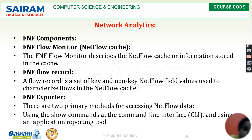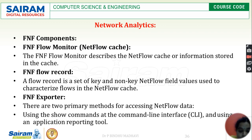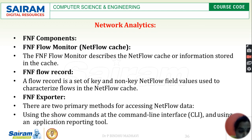The next component is the Flow Record — a collection of key and non-key flow fields used to characterize the NetFlow cache. Data records are characterized based on predefined procedures: how they are defined, how the aggregated data flow existed, and what common applications the data can be utilized for. There are two methods to access this NetFlow data: using show commands via a command-line interface where an application can use the data through a reporting tool, and using Flexible NetFlow export where information can be pushed or pulled from the cache as required.